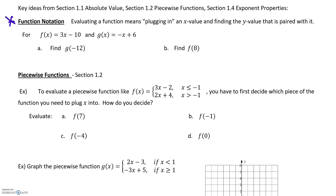Evaluating a function means plugging in an x value. So we've got two functions here, f and g. f of x equals 3x minus 10, and g of x equals negative x plus 6.